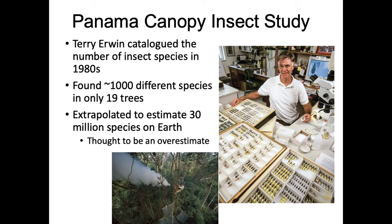Erwin's estimate came out to about 30 million species. Most people now think it's somewhere between 5 and 10 million, so his estimate is considered an overestimate. It's amazing to think that after so much science and species cataloging, we still have no clear idea how many species there are — just a rough estimate of 5 to 10 million, possibly up to 100 million. There's a lot of uncertainty in that number.